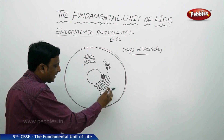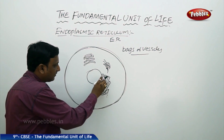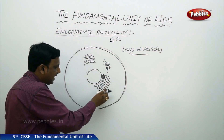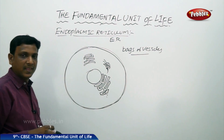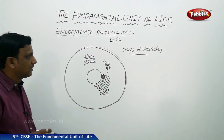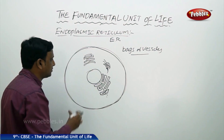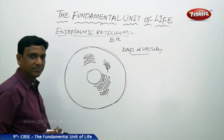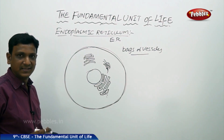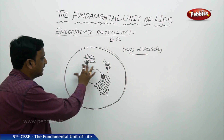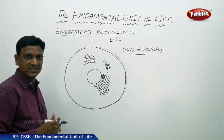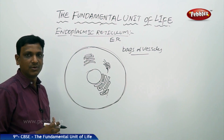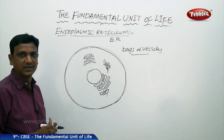They are forming some kind of channel or pathway. Even though they vary in their shape, size and orientation in different cells, they form a network which is called as the endoplasmic reticulum.